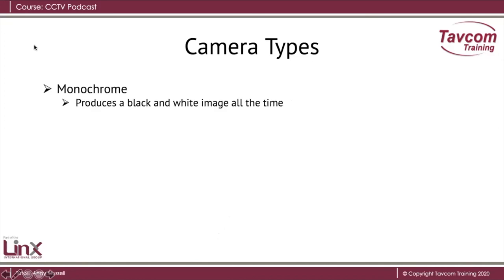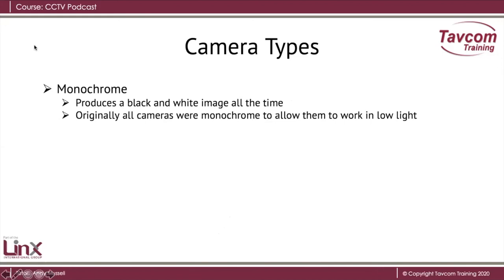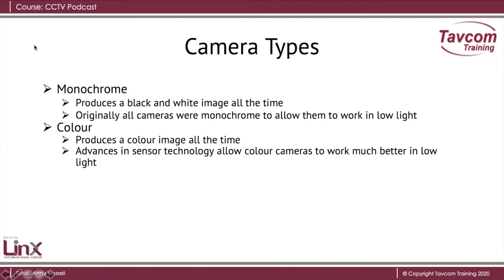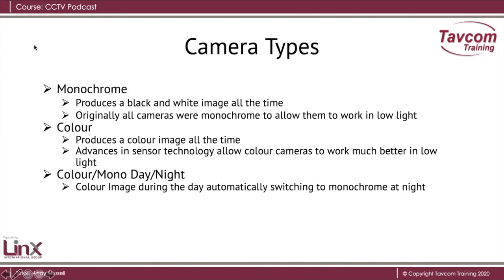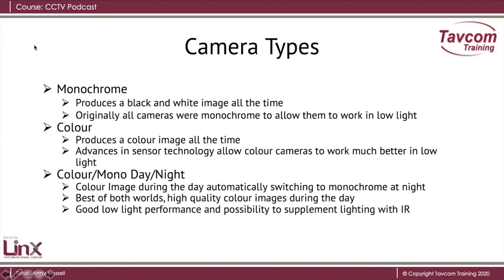A monochrome camera would produce a black and white image all the time. Originally, all cameras were monochrome to allow them to work in low light levels. A colour camera produces a colour image all the time. However, advances in sensor technology now allow colour cameras to work much better in low light. These days we tend to use an awful lot of colour mono or day-night cameras, often referred to as TDN — true day-night. A colour image during the day automatically switches to monochrome at night. Best of both worlds: high quality colour images during the day, good low light performance, and the possibility to supplement lighting with infrared.